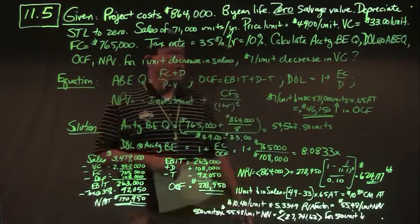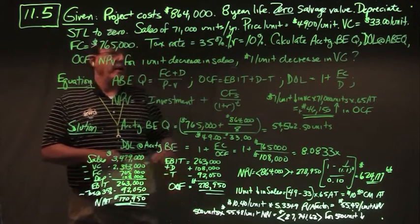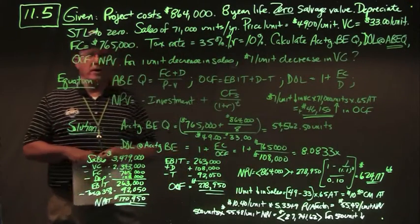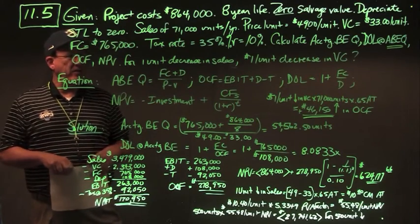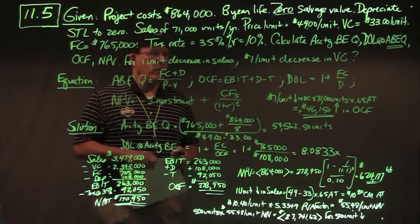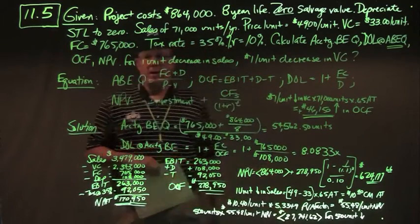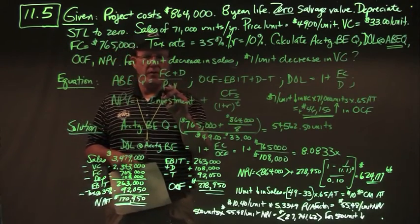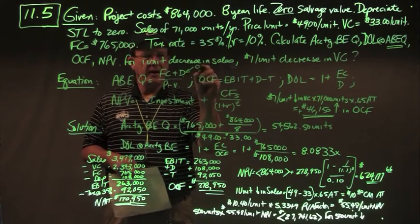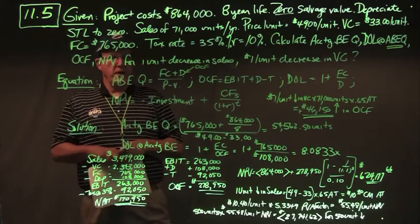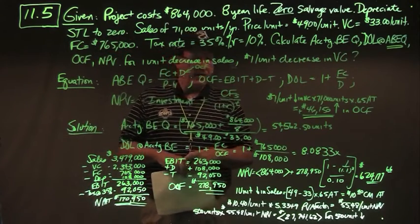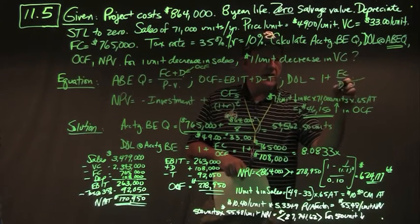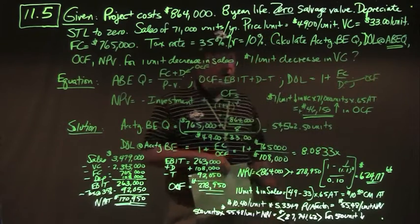We need to calculate: accounting break-even quantity, degree of operating leverage (DOL) at that quantity, OCF and NPV for a one-unit decrease in sales, and OCF for a one-unit decrease in variable cost. Accounting break-even is fixed cost plus depreciation over contribution margin P minus V, where OCF equals depreciation. DOL is one plus fixed cost over OCF, which at accounting break-even equals one plus fixed cost over depreciation.